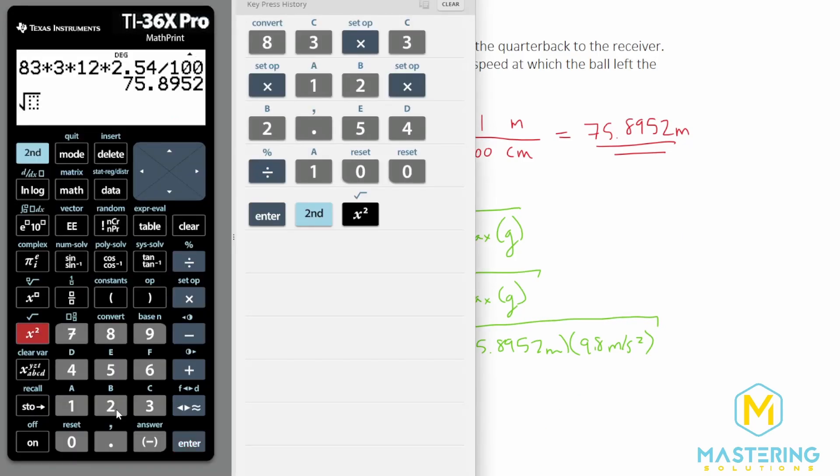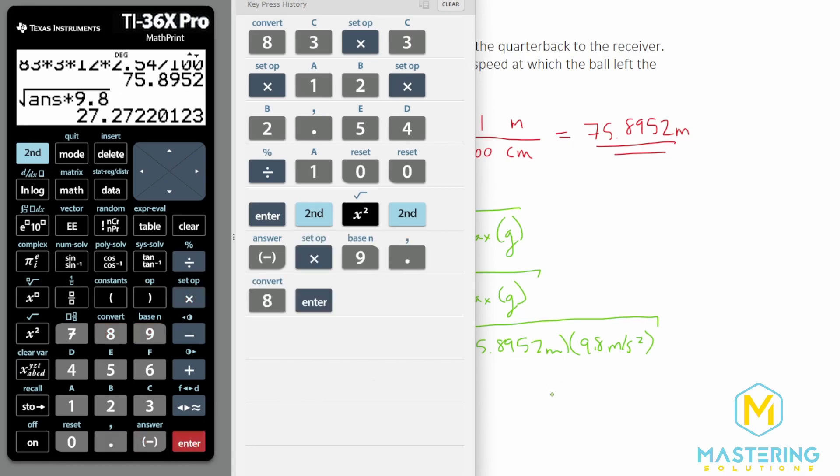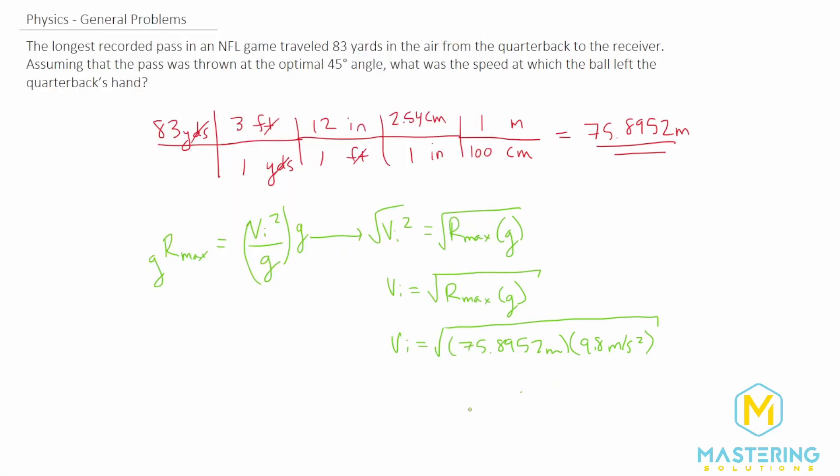So we have the square root of 75. I guess we can just do a second answer. So 75.8952 multiplied by 9.8 gives us 27 meters per second. So the answer for how fast he had to throw it was 27 meters per second.